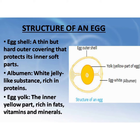Second is albumin — a white jelly-like substance rich in proteins. Third is the egg yolk — the inner yellow part, which is rich in fats, vitamins and minerals.